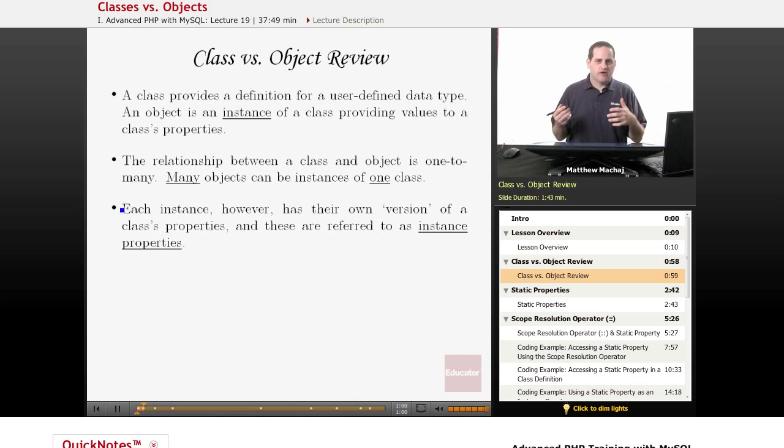So basically, a class, as we know, is essentially a user-defined data type. And when you create an object, what you're doing is creating an instance of that class. You're basically instantiating almost like a copy of that class, and you're filling in the values for the properties of it. Essentially, what you have between a class and objects is a one-to-many relationship. You have one class definition, and you can have as many different object instances of that class as you need. The class sort of provides the template, and the objects are sort of the realization of that class.